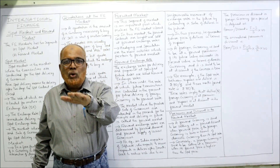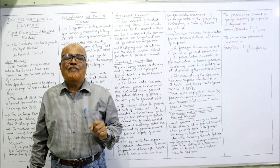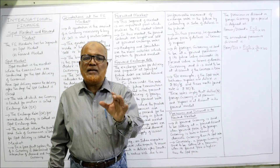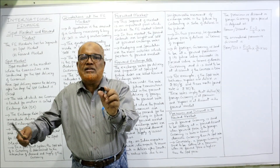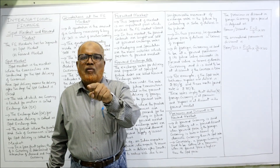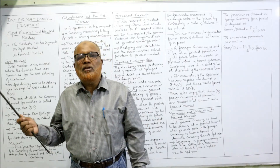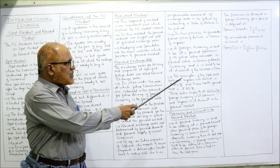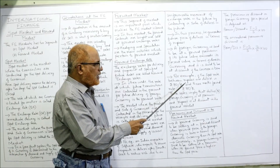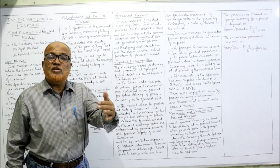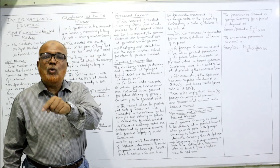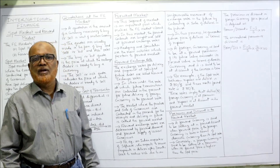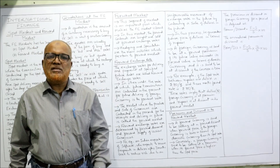Conversely, if the forward price is lower than the spot price, the foreign currency is going at a discount. For example, if the spot rate is 80 rupees per dollar and the forward rate is 75 rupees per dollar, the dollar is going at discount. When one currency is at premium, the other currency is at a discount — so if the dollar is at premium, the rupee is at discount.